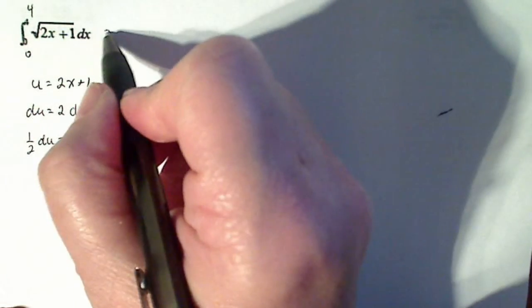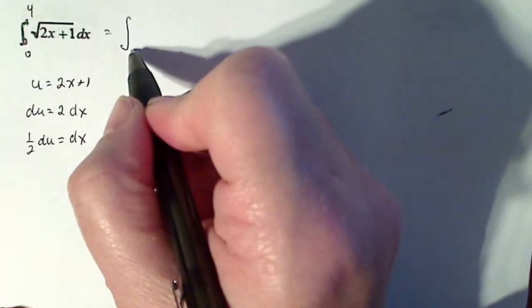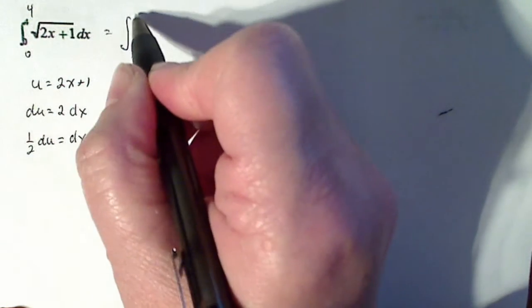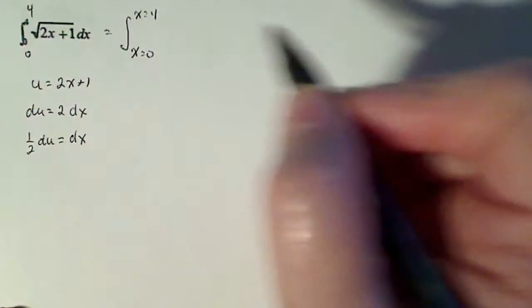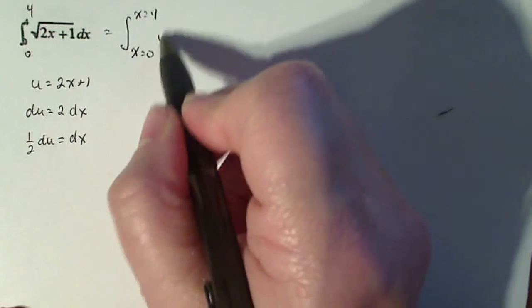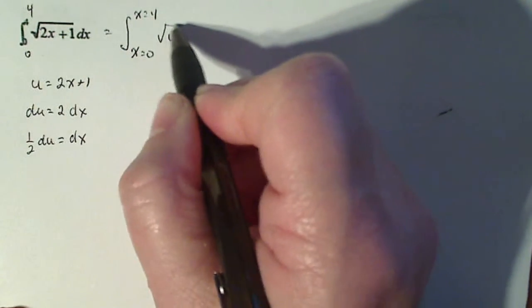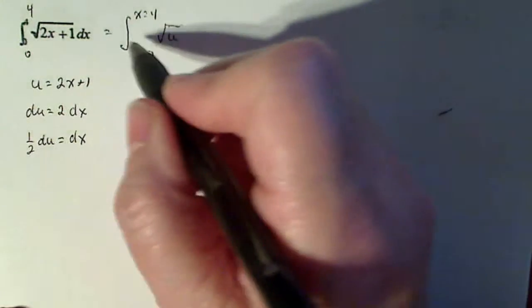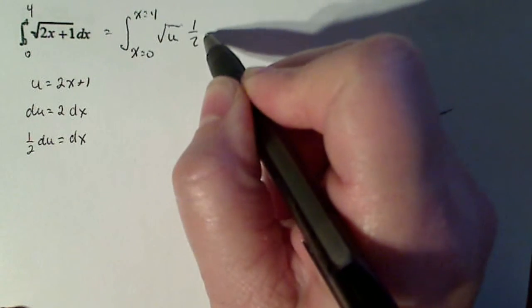So I should be able to substitute, now this is equal... Now I haven't changed my limits, so I'm going to make sure it's noted. 2x plus 1 is u and dx is one half du.